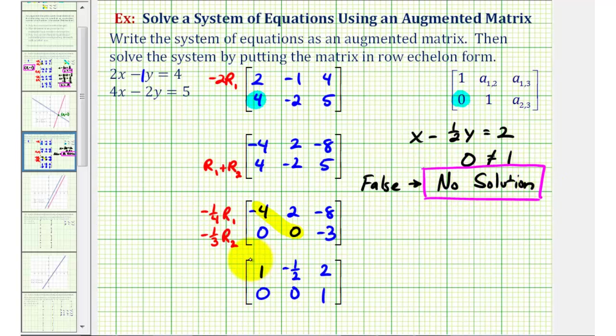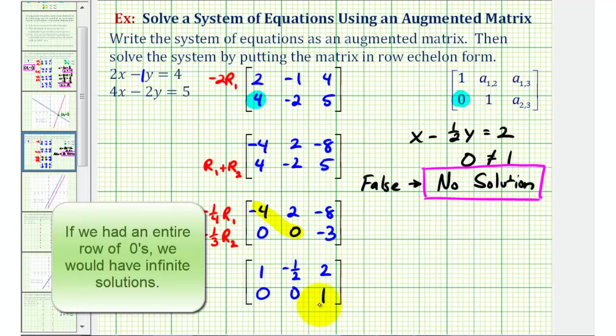So notice how in this case, we had a zero in the main diagonal, and because of this one here, the result was we had no solution, which means our system is an inconsistent system.